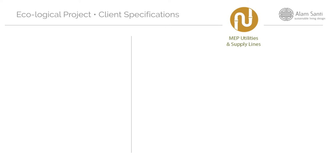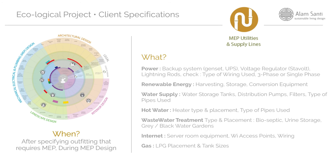Next is utility lines — generally the client signs off on what's recommended by the MEP designer, especially one with experience in ecological MEP design. Considerations include: power supply and whether you'll use renewable energy, rainwater harvesting for water systems, hot water heating, wastewater management — a very interesting topic with many eco strategies — internet type, and any gas considerations for the project.